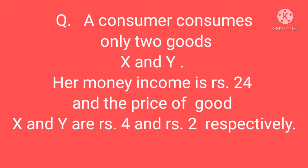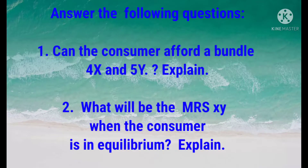Product X ki keemat 4 rupee hain aur product Y ki keemat 2 rupee hain. Answer the following questions: can the consumer afford a bundle of 4X and 5Y? Explain. Kya consumer product 4X aur 5Y ke bundle ko khareed paane mein saksham hai? Second: what will be the MRS of product X and Y when the consumer is in equilibrium? Explain. Consumer ke liye jab equilibrium position pe ho to product X aur Y ki marginal rate of substitution kya hogi? Explain.